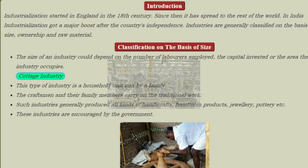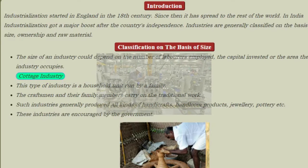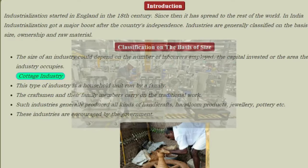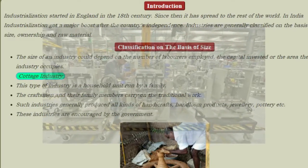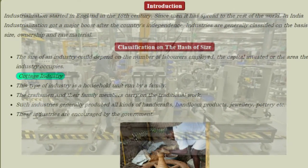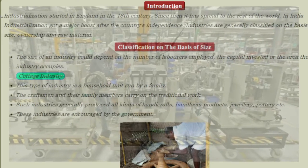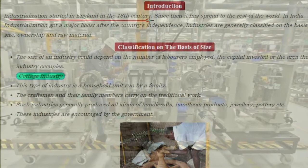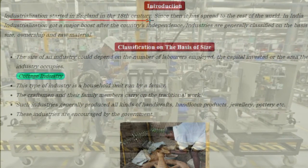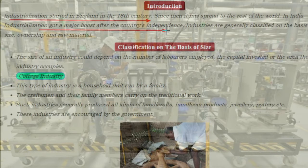Now let us learn about industries and their classification. For a country's economy, industry is the main driver. Industrialization started in England in the 18th century, and since then it has spread to the rest of the world. In India, industrialization got a major boost after India got independence.